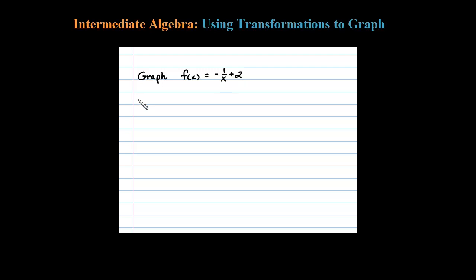To graph this function, let's first identify the basic graph as f(x) = 1/x. We want to do the reflections first. I notice we have that negative, so f(x) = -1/x.